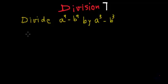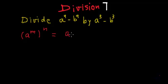One of the identities is: a to the power m, whole to the power n, is equal to a to the power m multiplied by n. We have proved it and learnt the explanation for this identity in earlier videos.